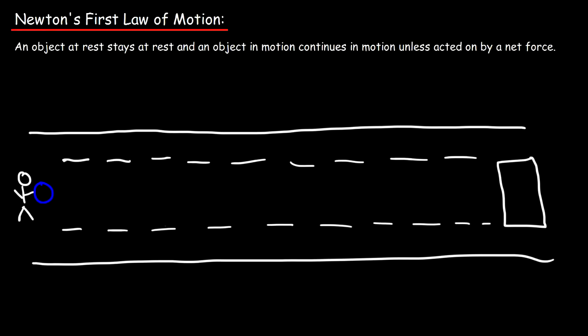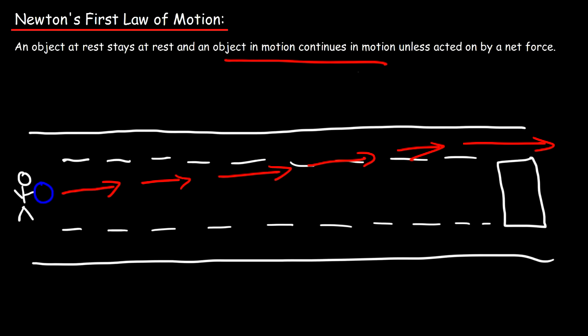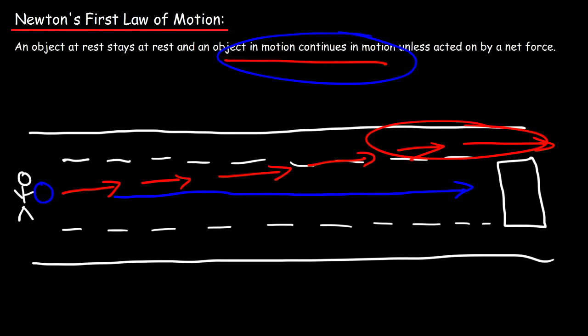The ball continues in the direction you send it. If you send it at an angle, it will keep traveling at that angle and miss the pins. If you roll it toward the left or right, it will go straight to the edge and miss. The only way to hit the pins is to aim it straight — if you start it out straight, it will continue traveling straight. This illustrates the second part of Newton's first law.